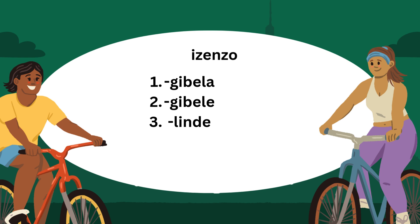Kibele — to ride on. Kibele is when you rode something. Linde — waiting for. For example, kibele — I am riding. Ki kibele imoto — I am riding on a car. Bengi kibele imoto — I was riding a car in the morning. Linde — waiting for. Mama ulinde — mom is waiting for a taxi.